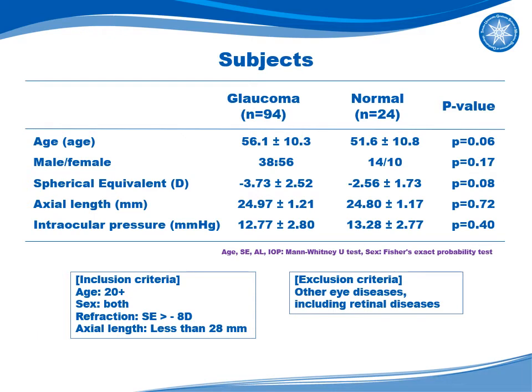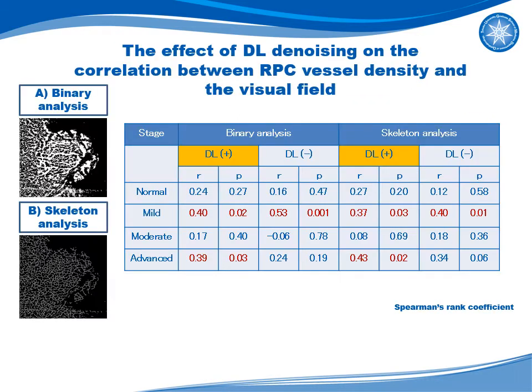The subjects include 94 glaucoma patients and 24 normal cases. There are no significant differences in sex, axial equivalent, or IOP. The tables show the correlation between RPC vessel density and visual field with and without deep learning denoising at different glaucoma stages.